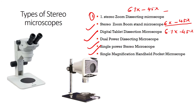The dual power dissecting microscope has a magnification of 10x to 30x, 360-degree rotational ability, and a high-intensity LED light ring. The single power stereo microscope has a magnification of 10x to 40x and diopter adjustments of 50 mm to 70 mm.